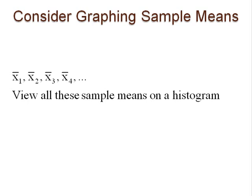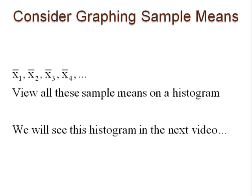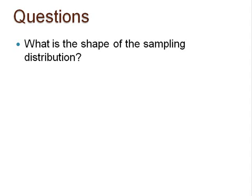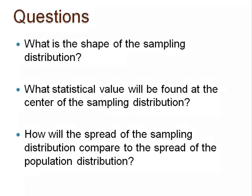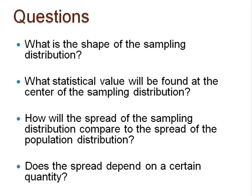I want you to consider what would happen if, in theory, we took many, many samples, found many, many sample means, and displayed all those sample means in a histogram, remembering first that we set our original population to have a normal distribution. What kind of shape would this theoretical sampling distribution have? What value do you think would be in the center of the sampling distribution? How would the spread of this sampling distribution differ from the population distribution? Does the spread depend on some quantity? Please take some time after watching this video to consider answers to each of these questions.